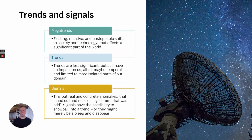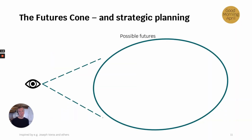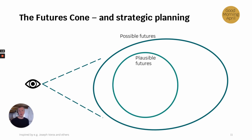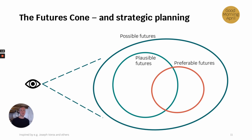What's interesting in futures thinking are the trends and the signals — we use them to understand the possible futures that might unfold. Out of all the possible futures, some are plausible futures where the likelihood of things happening has a certain degree, and out of these there might be preferable futures: futures that have a likability, futures that we would like to happen.